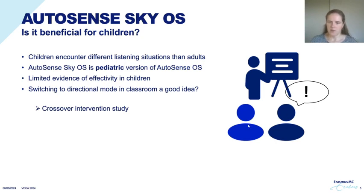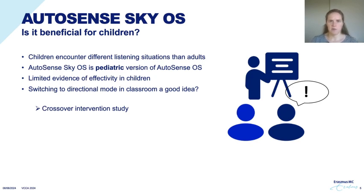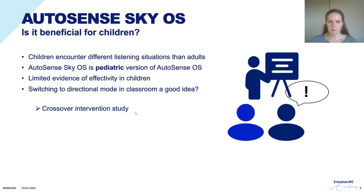If a classmate says something, the child can turn their attention and rotate their head so the directional microphone also picks up that classmate's speech. But first the child needs to be able to detect that a classmate started talking and get enough information to determine if it's important to switch attention to that classmate. So in a classroom situation, a directional microphone can be an advantage but also have disadvantages, and this is what we wanted to study. We did a crossover intervention study to compare two settings with AutoSense turned on and off.